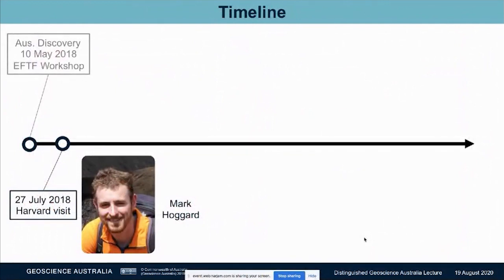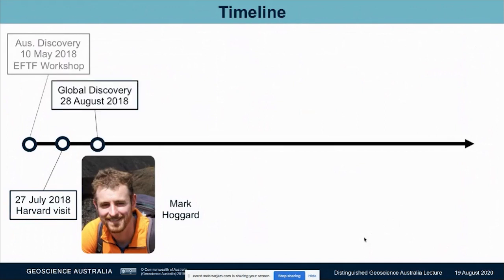A few months later, I had the great fortune of visiting the United States Geological Survey to provide them a seminar series on the type of work we are doing. After that, I visited my colleague Mark Hoggard at Harvard University. Mark was working on making better maps of the lithosphere-asthenosphere boundary and had collated all the existing maps of the LAB across the world. Knowing where the big deposits sit, I thought it may well be that those big deposits sit on those boundaries. On the flight home, I started compiling a global dataset of where those deposits occur. And then the discovery of the global insights came on the 28th of August.